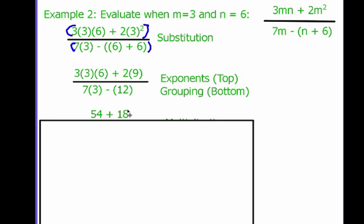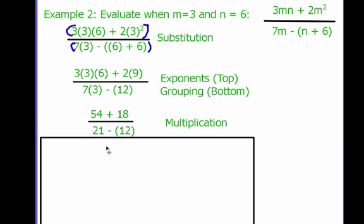And 2 times 9 is 18, so up top I have 54 plus 18. On the bottom, I also have some multiplication, 7 times 3, which is 21.